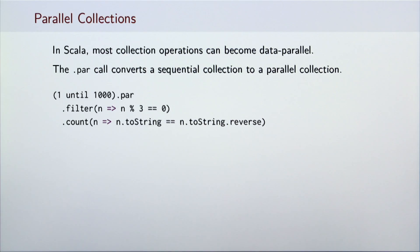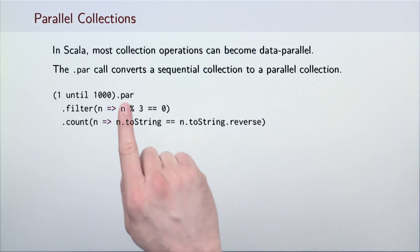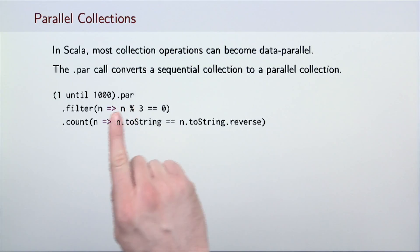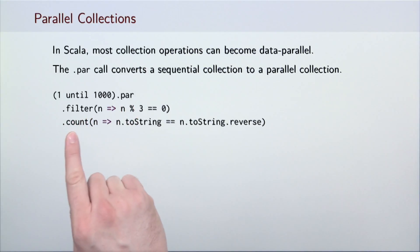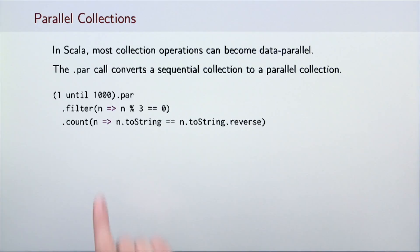Scala collections can be converted to parallel collections by invoking the par method. Subsequent data parallel operations are then executed in parallel.